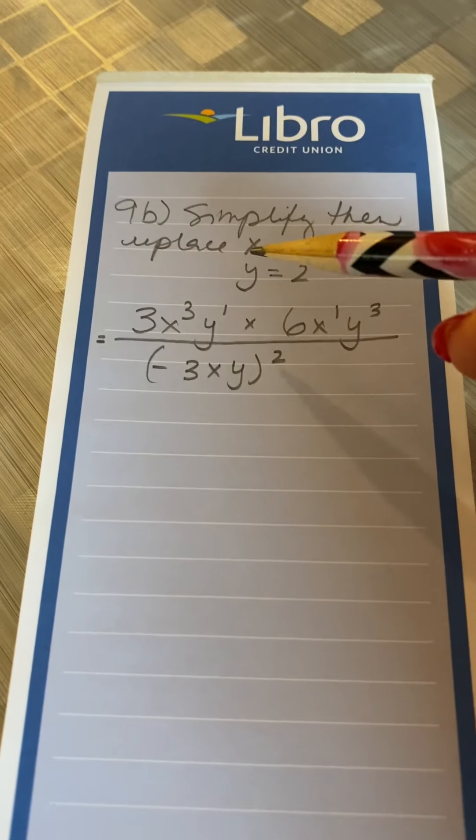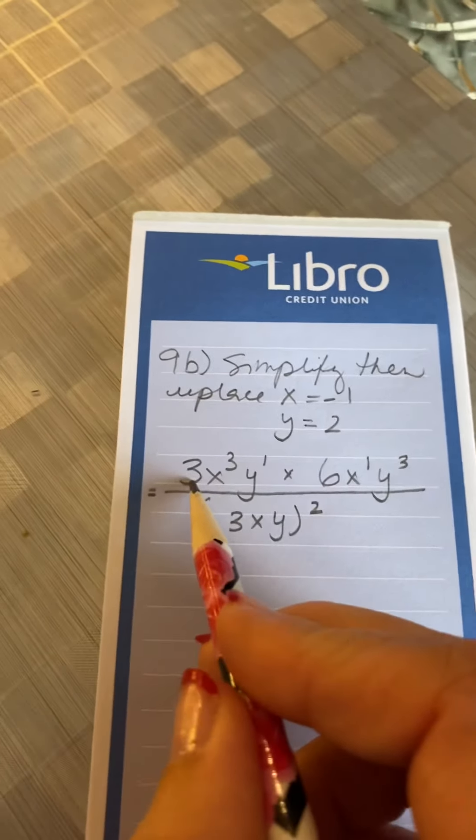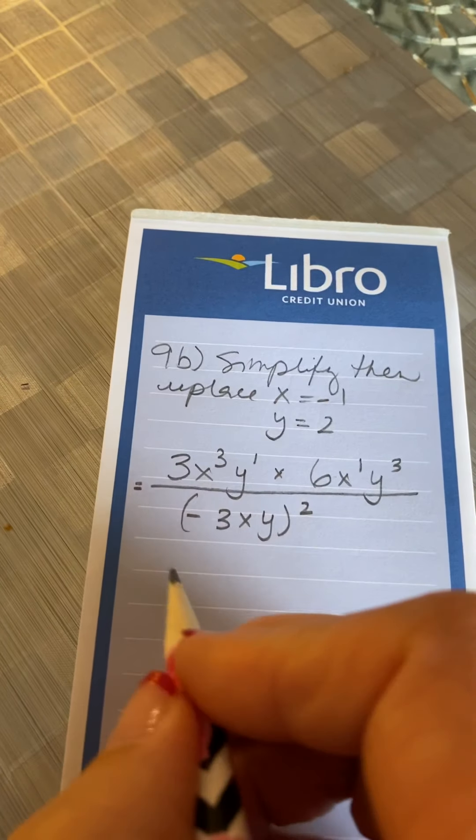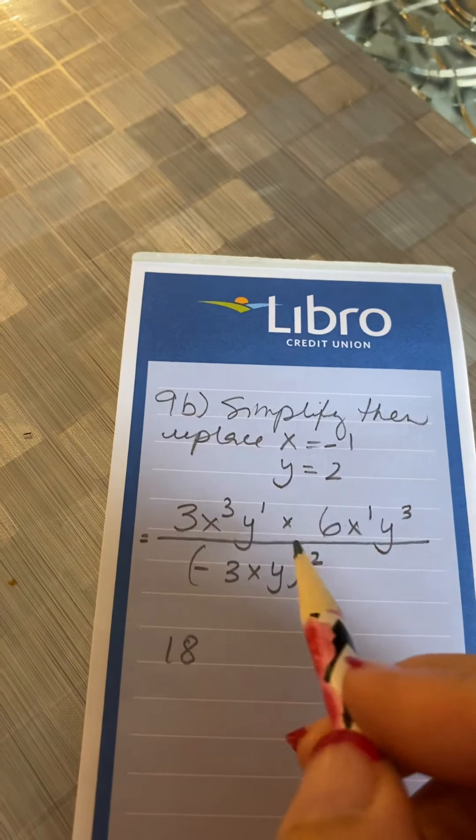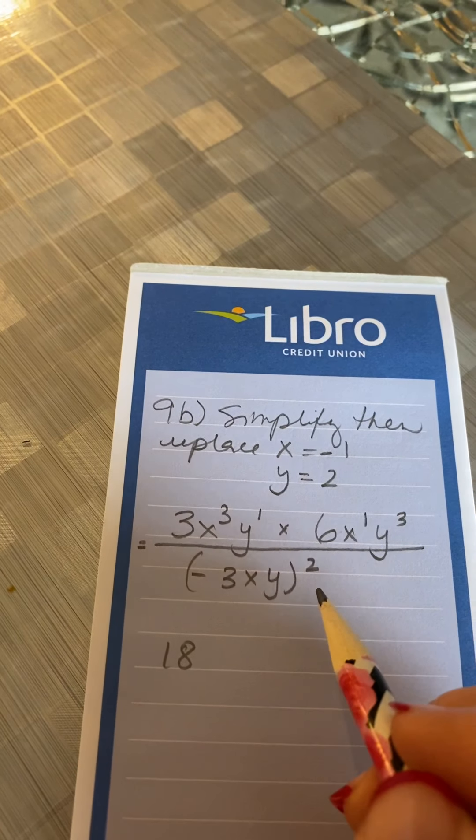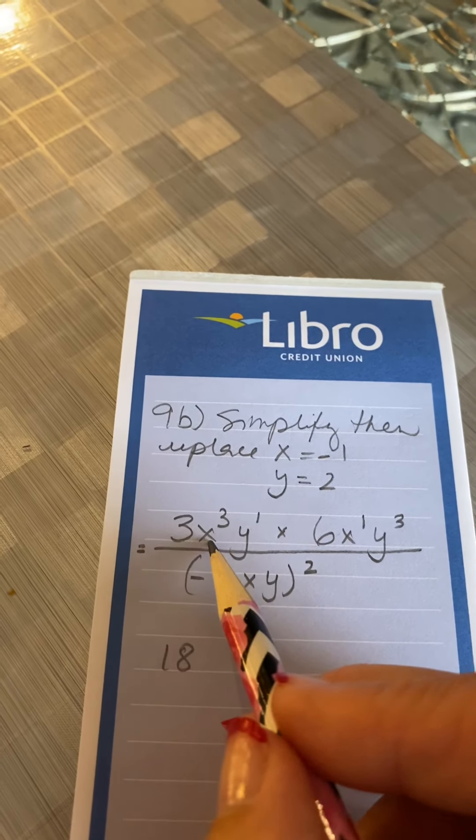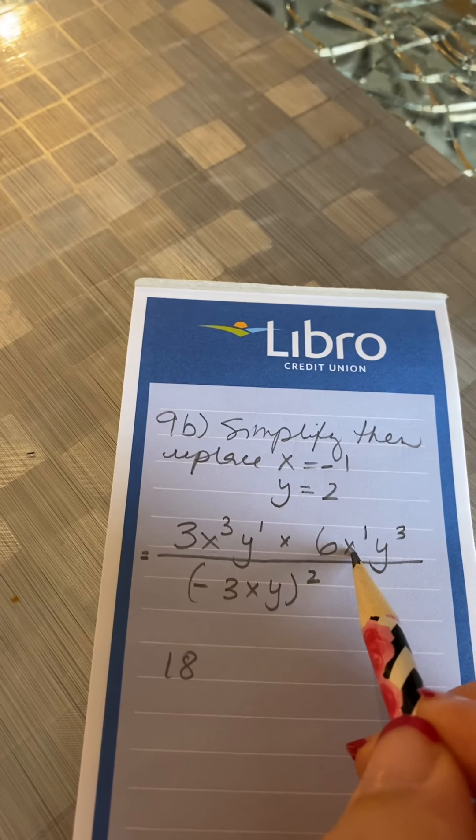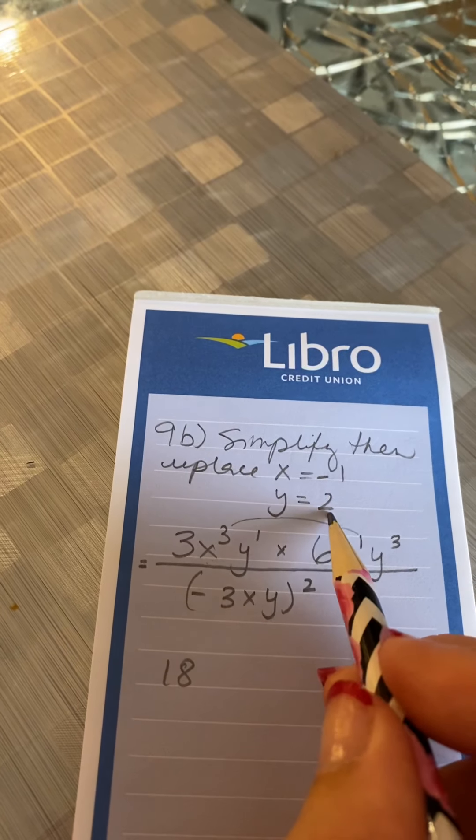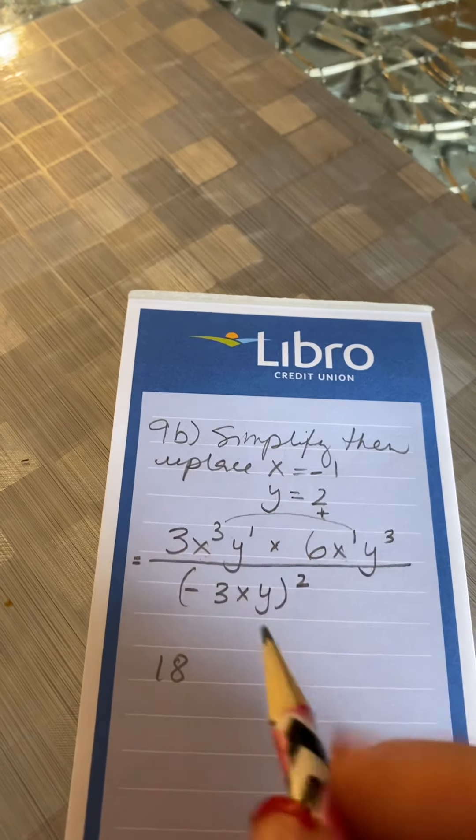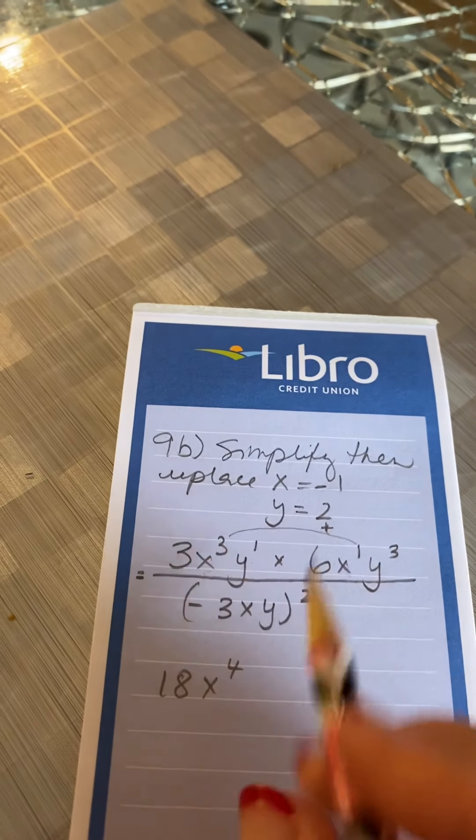So for this question here, just looking at the top, I would multiply the coefficients first, so 3 times 6 is 18, and then you're using the exponent rule, which says that if you're multiplying the same bases, you want to add the exponents. So we have an x cubed and an x to the 1, so the same base of x. What you want to do is add those two exponents, so 3 plus 1 is 4, and same thing for the y's, 1 plus 3 is also 4.